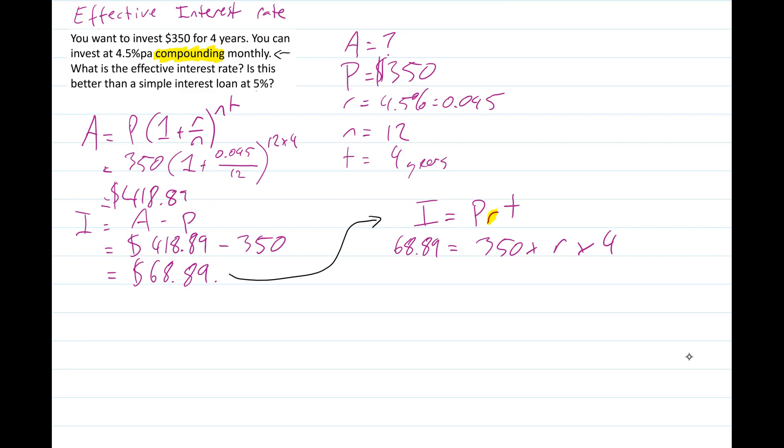We've got $68.89 equals $350 times the rate times 4 years. And if I rearrange that, I'm going to bring the $350 and the 4 over the other side of the equal sign. The opposite of times is divide, so that becomes $68.89 divided by $350 times 4 equals R.